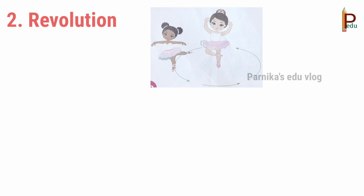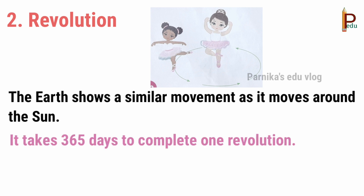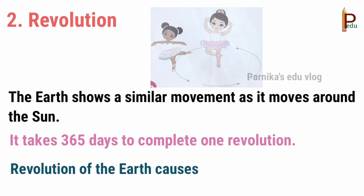Next, revolution. Look at the picture — Tina is moving in circles around Vijaya, who is standing at the center. The Earth shows a similar movement as it moves around the sun. It takes 365 days to complete one revolution. Revolution of Earth causes seasons.